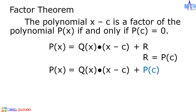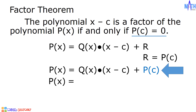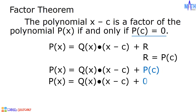Since p of c is equal to zero according to the factor theorem, let us substitute zero for p of c in this equation. And we have p of x is equal to q of x times the quantity x minus c, and p of c becomes zero. And q of x times the quantity x minus c plus zero is equal to q of x times the quantity x minus c.